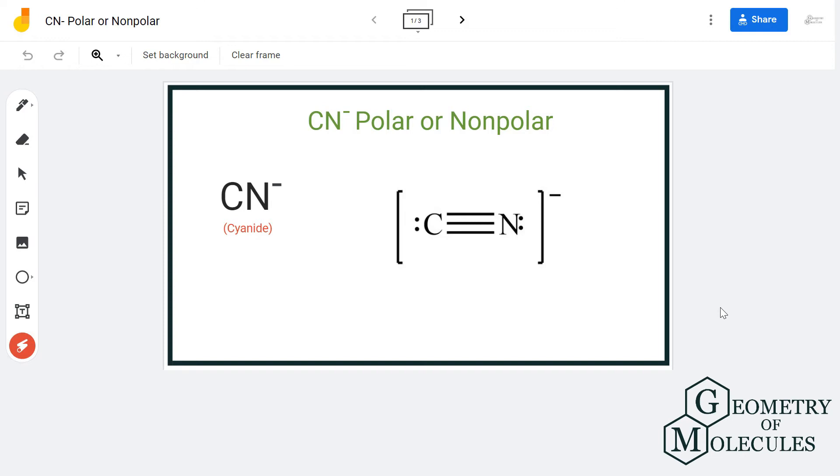Hi guys, in this video we are going to determine the polarity for cyanide ion. It is also known as cyanide anion and the chemical formula is CN⁻. To determine its polarity, we will first look at its Lewis structure and shape.